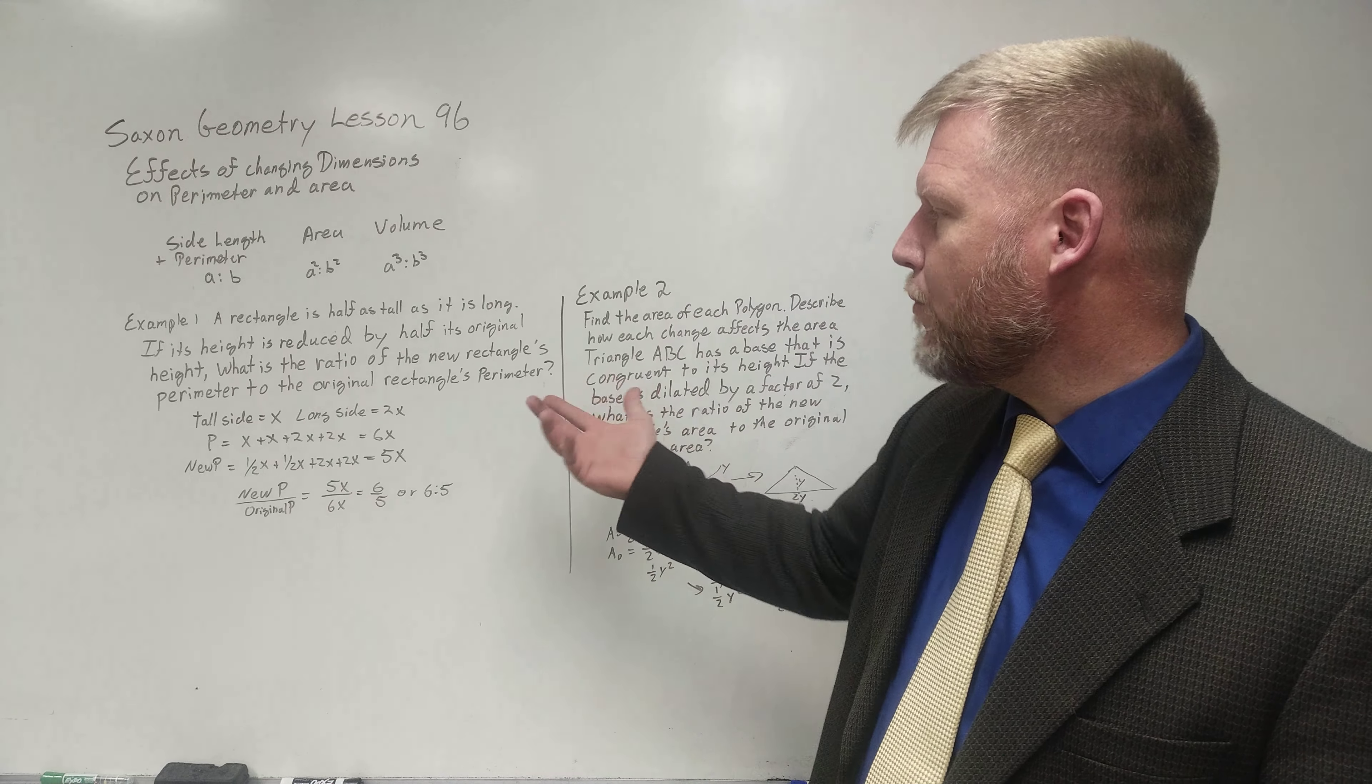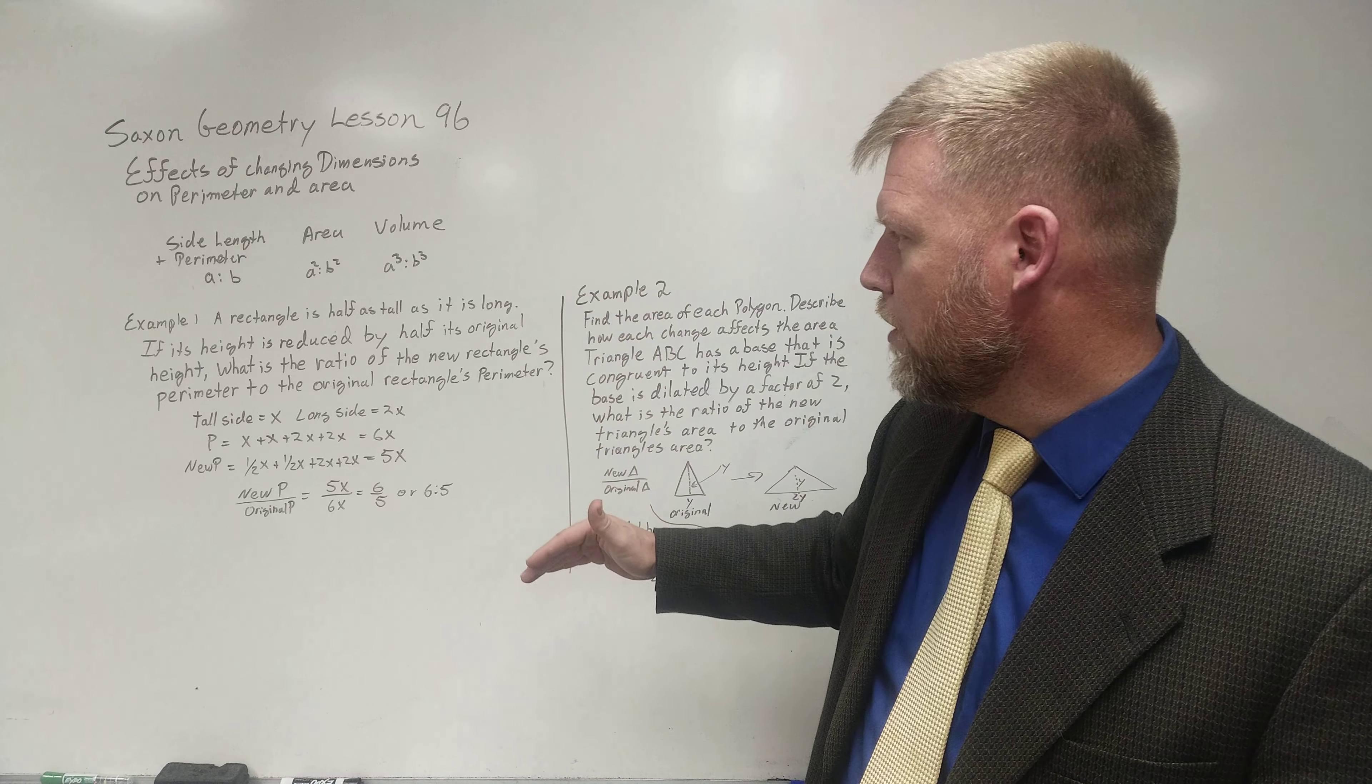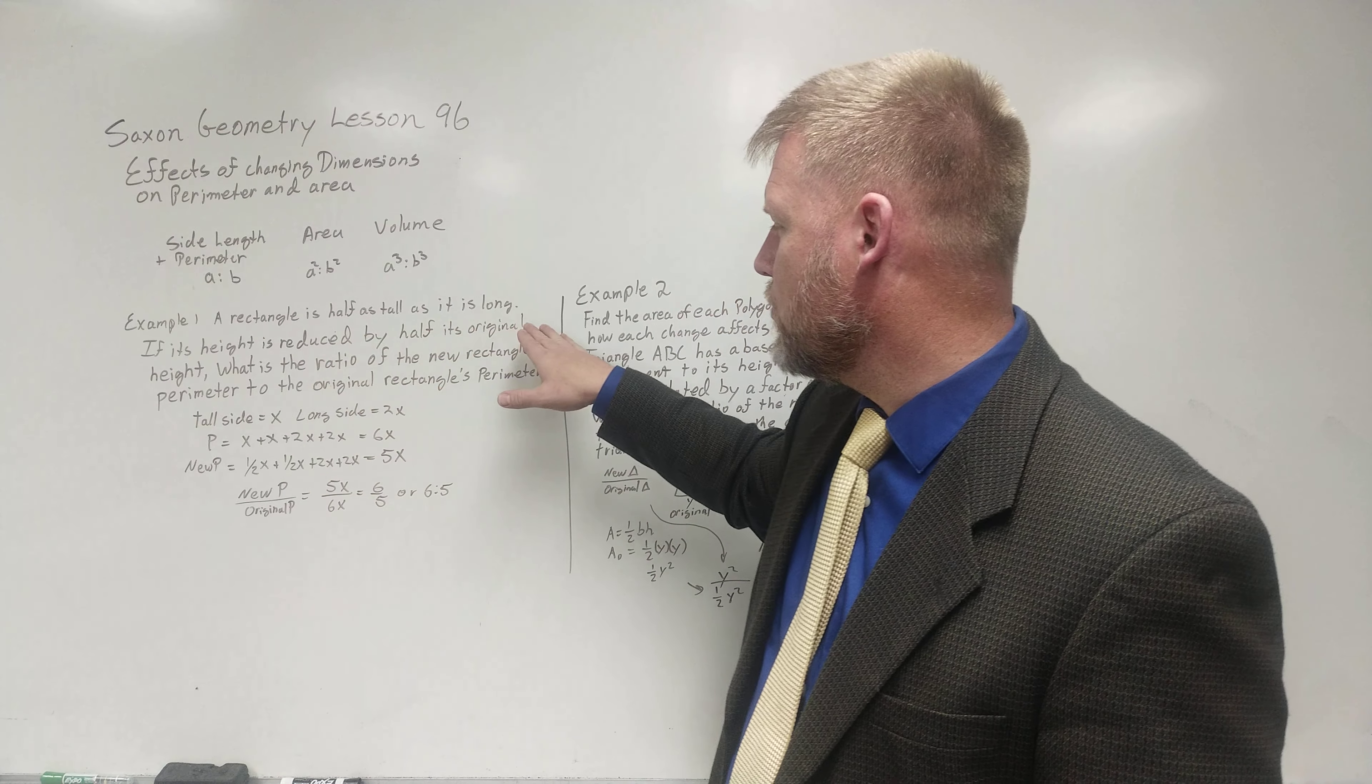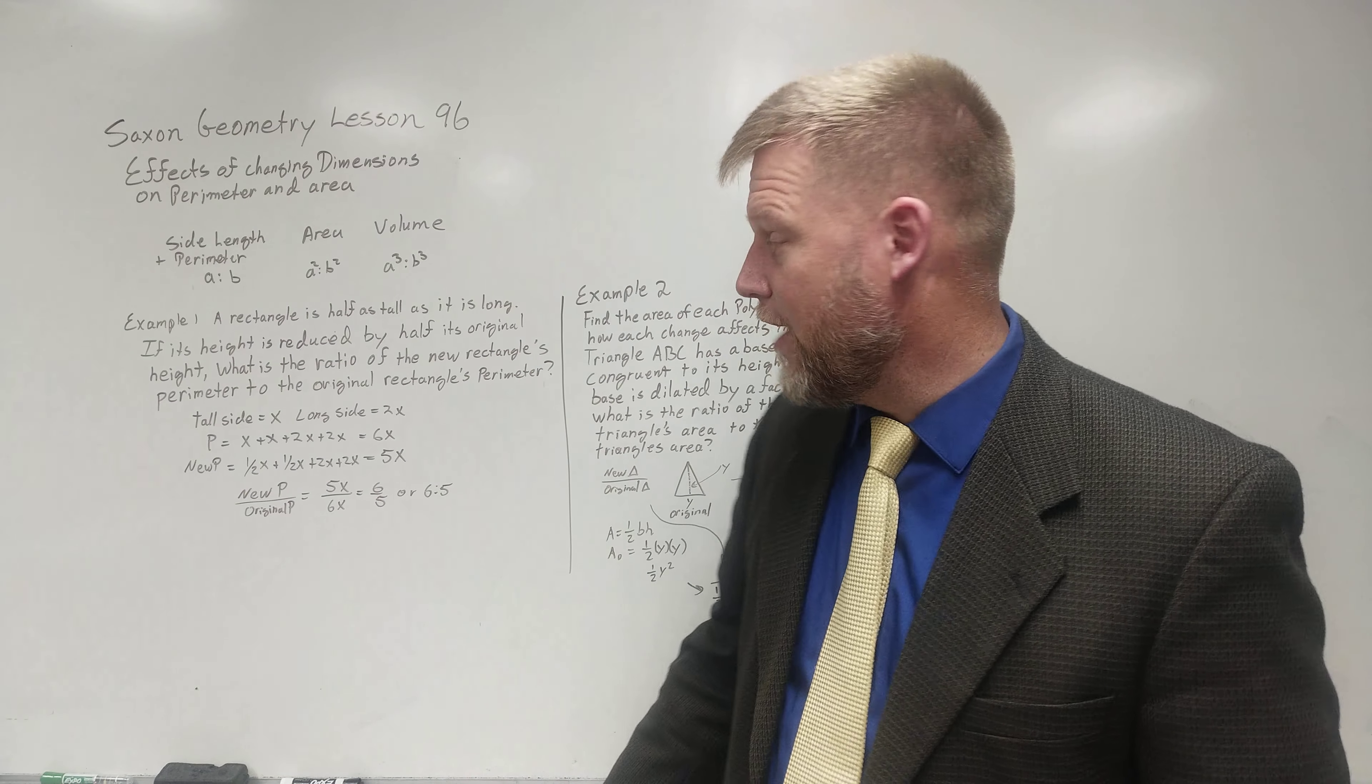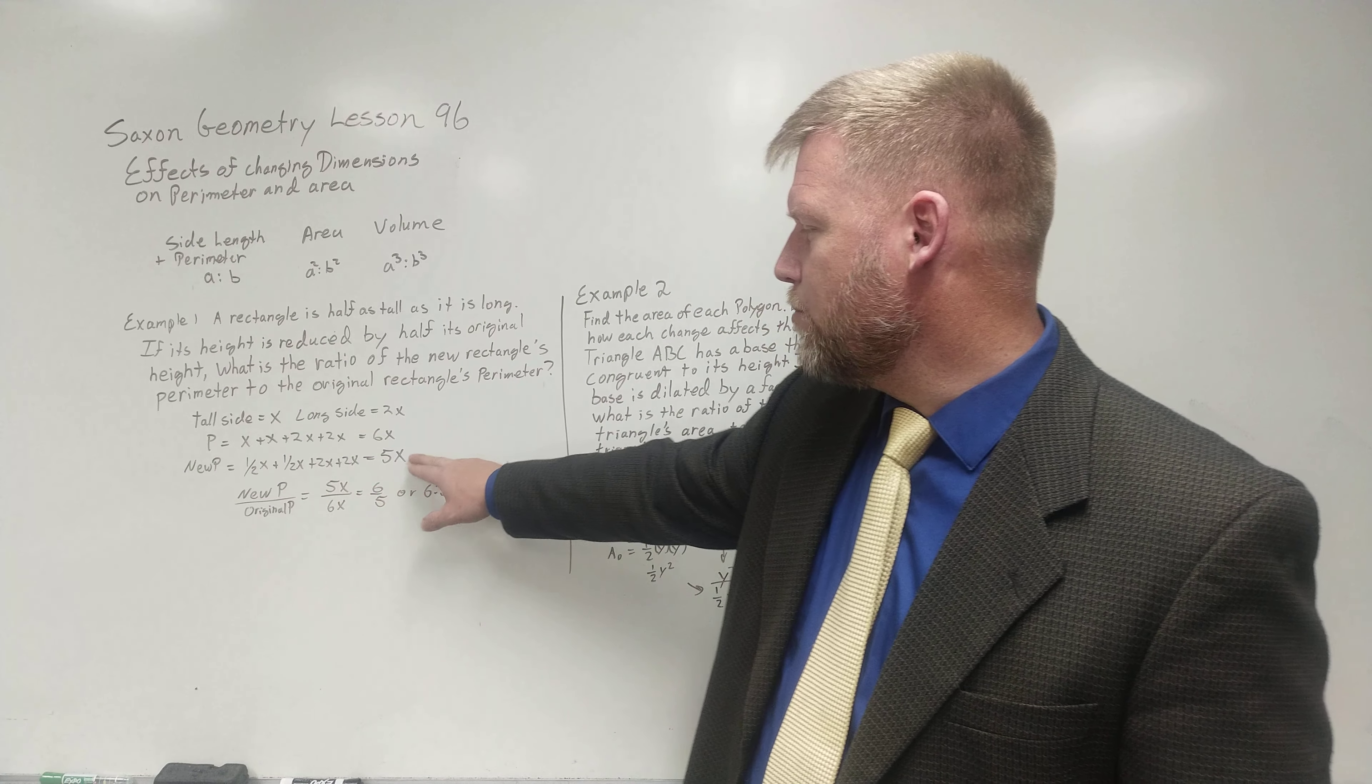They said the new perimeter, right, the new rectangles perimeter to the original. So I want to go new to original. Okay, and the new one is being reduced by half its original height. So instead of being x, it's now one half of x, right? So one half x plus one half x plus 2x plus 2x gives me 5x.